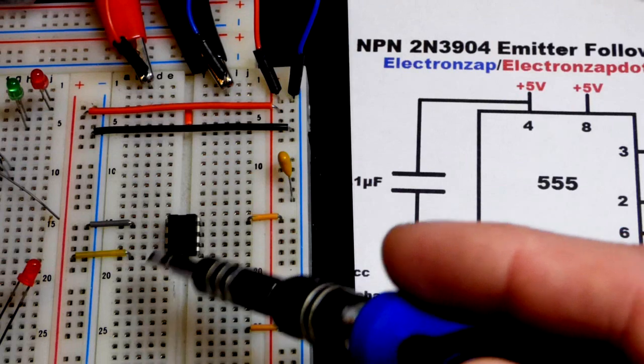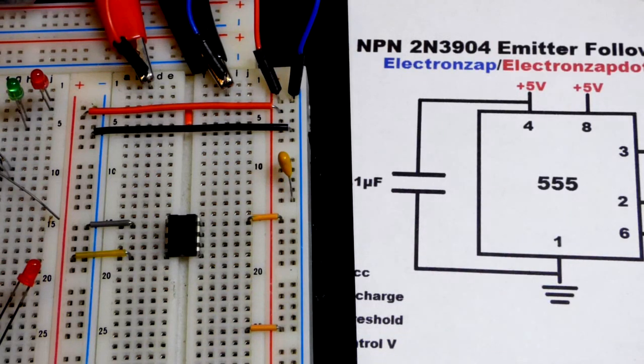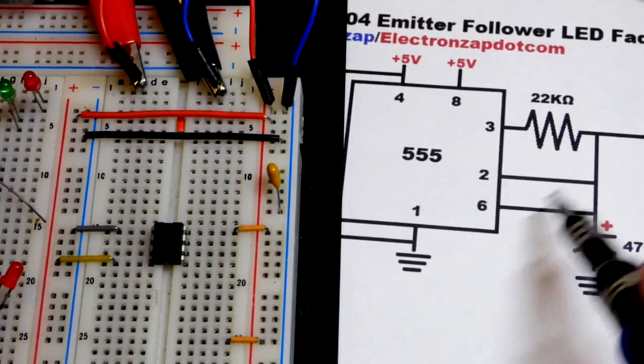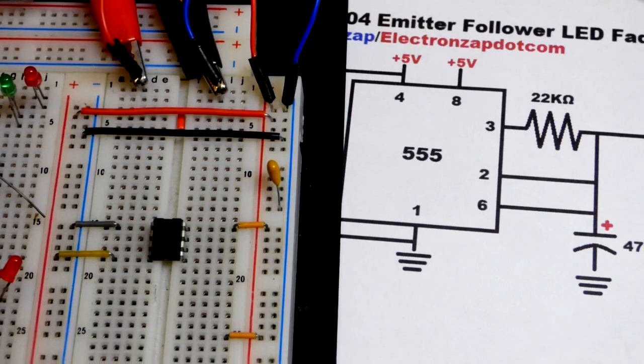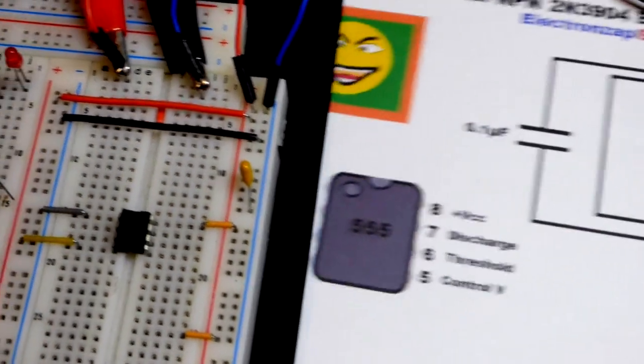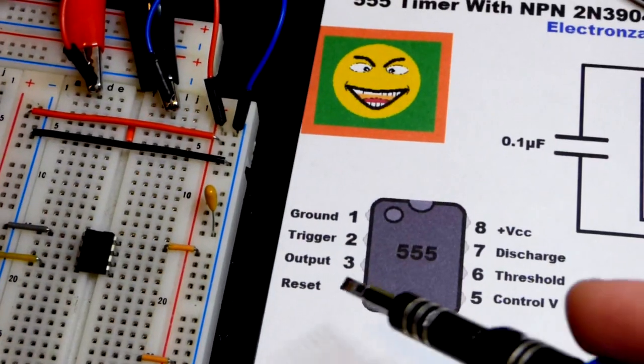It's just easy to put it to the positive rail, and that eliminates any possibility of that getting a low signal. Now we have these three pins here, so they're all really kind of connected together in a way.